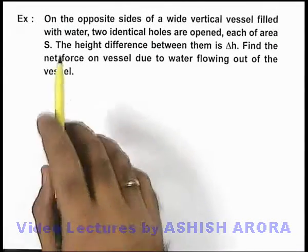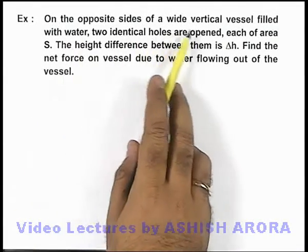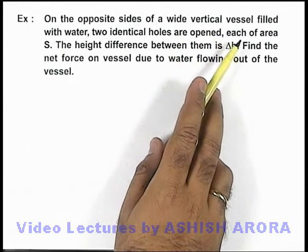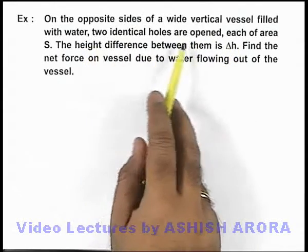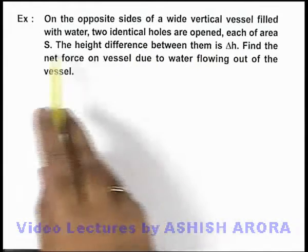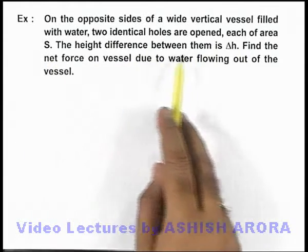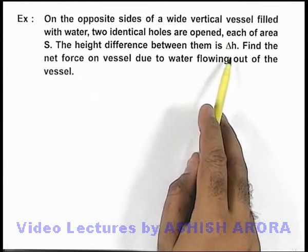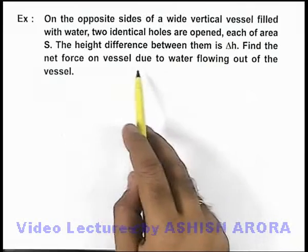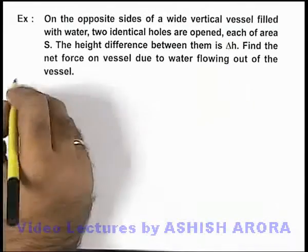In this example we are given that on the opposite sides of a wide vertical vessel filled with water, two identical holes are open, each of area S, and the height difference between them is delta h. We are required to find the net force on the vessel due to water flowing out of the vessel.